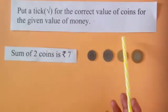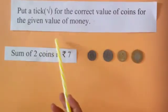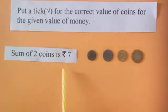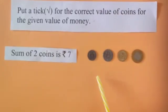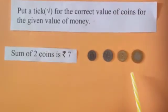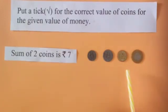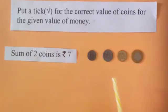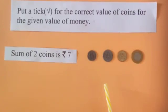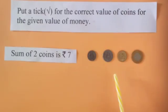Put a tick for the correct value of coins for the given value of money. The sum of 2 coins is rupees 7. So dear students, it means that the total value of any 2 coins will be rupees 7. We have 4 coins: 1 rupee coin, 2 rupee coin, 5 rupee coin, and 10 rupee coin. Let's see which 2 coins will sum to rupees 7.